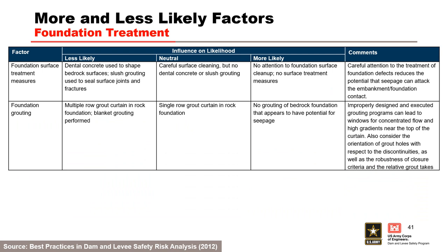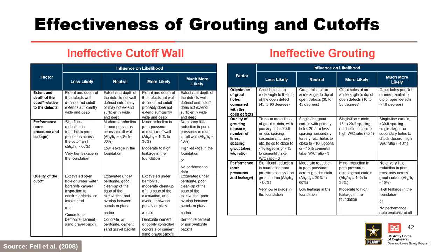This portion of the table from best practices can be used to help assess the likelihood of foundation surface treatment and foundation grouting not being effective. Tables from Fell et al. 2008 can also be used to assess the likelihood of grouting or cutoff walls not being effective. The factors for grouting address orientation of the grout holes compared to open defects, the quality of grouting, and performance in relation to pore pressures and leakage. The factors for cutoff walls include width and depth of the cutoff relative to defects, performance in relation to pore pressures and leakage, and the quality of the cutoff. These tables can be used as a starting point, but the risk team must develop project-specific more likely and less likely factors.